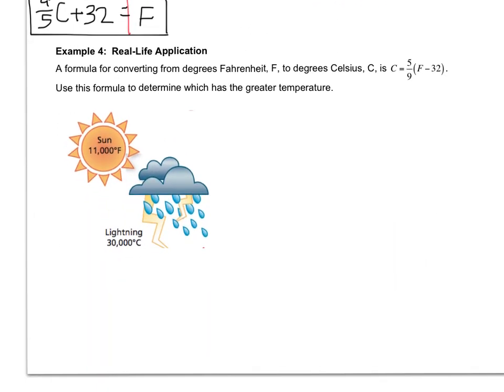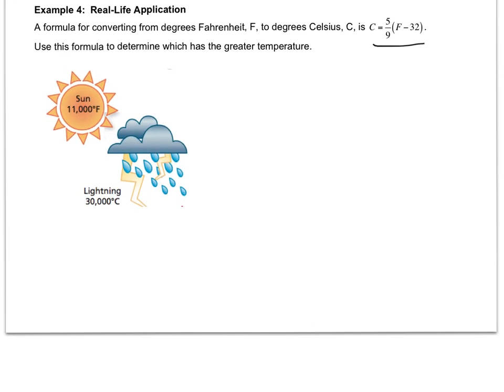A formula for converting from degrees Fahrenheit to degrees Celsius is this, that they gave us earlier in the question. Use this formula to determine which has a greater temperature. So I've got this value in Fahrenheit and this value in Celsius. I'm going to set you up and then you're going to solve it. So here's the setup. You write your formula because you always write a formula if there is one in the question. And it doesn't matter who you plug in. You're just going to pick one of them. So I'm going to turn the sun into Celsius.